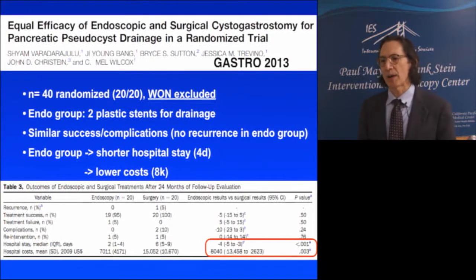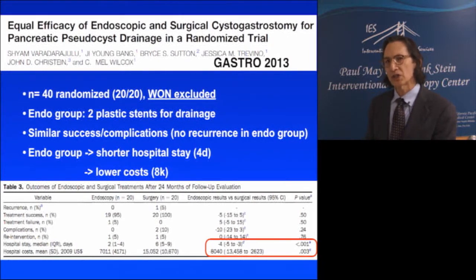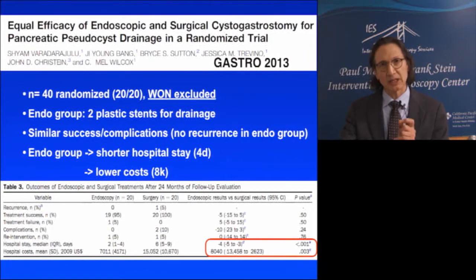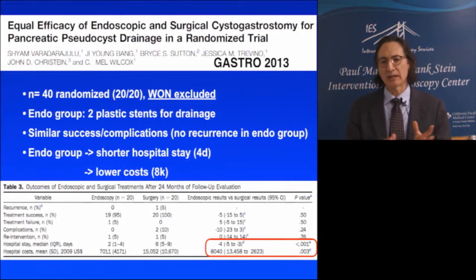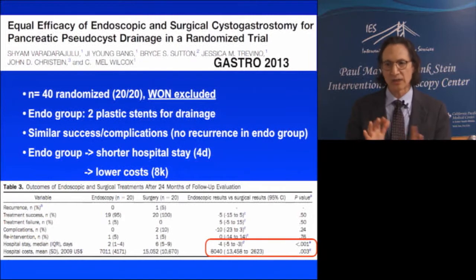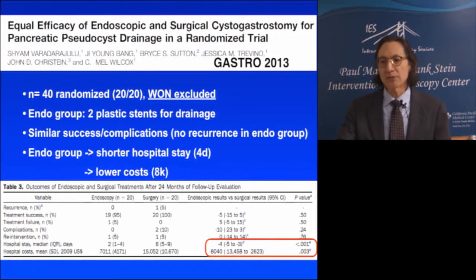An important study published in 2013 randomized patients between endoscopic pseudocyst drainage versus the then-gold-standard surgical cyst gastrostomy. It specifically excluded WON patients. In the endoscopic group, there was a significantly shorter hospital stay by four days and lower cost by more than $8,000 — statistically significant. Endoscopic treatment consisted of two plastic stents with no debridement; the endoscopic group had no recurrence of pseudocyst while the surgical group had one recurrence.